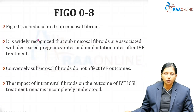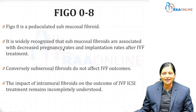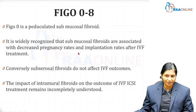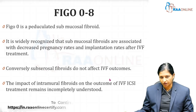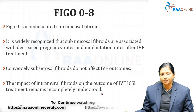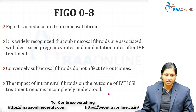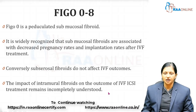FIGO type 0 is a pedunculated submucosal fibroid. It is widely recognized that submucosal fibroids are associated with decreased pregnancy rates and implantation rates after IVF treatment. Conversely, subserosal fibroids do not affect IVF outcomes. The impact of intramural fibroids on the outcome of IVF treatment remains incompletely understood.